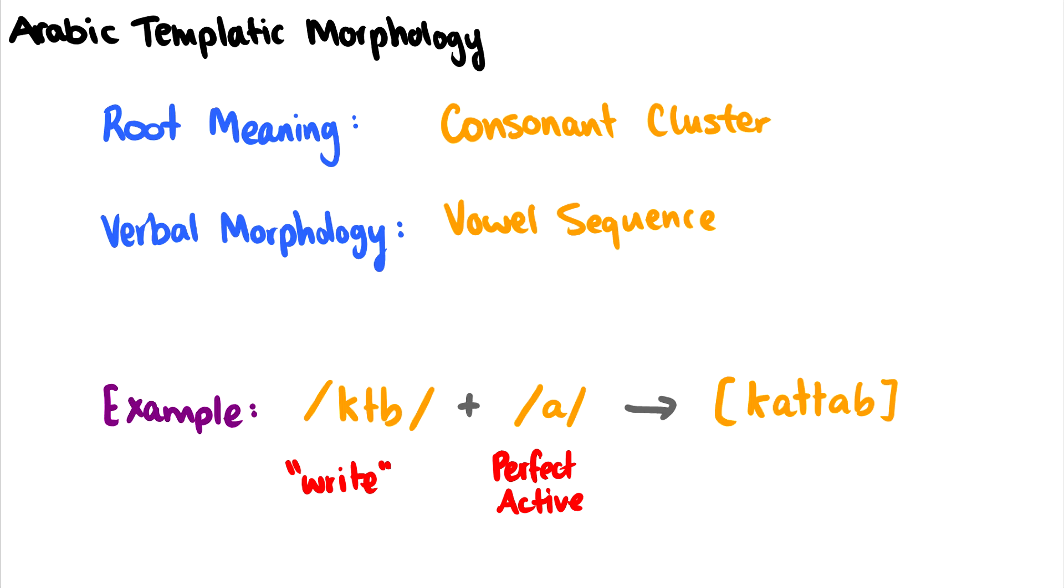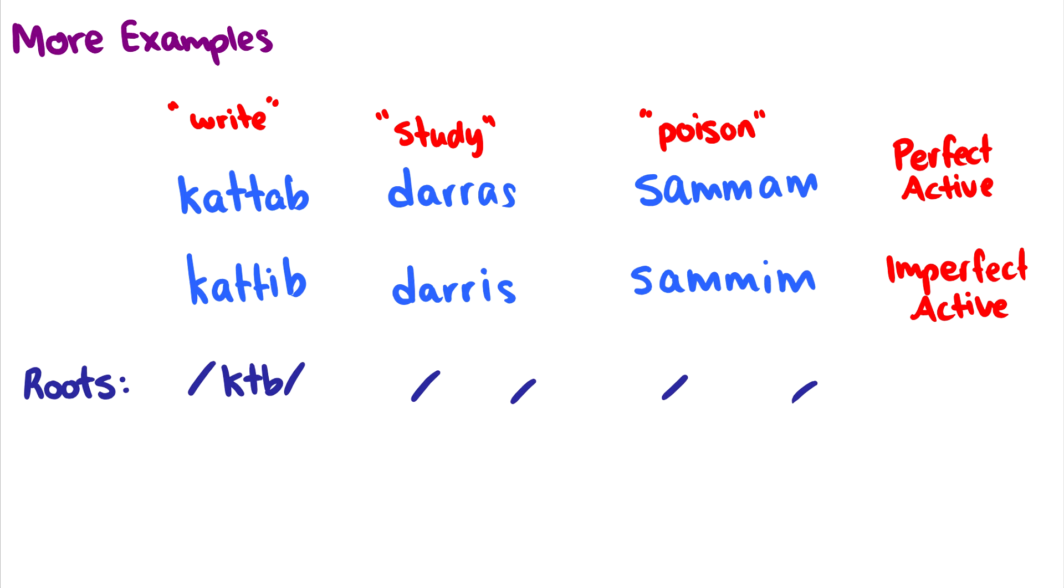So how do we do this with the CV tier? Now this is incredibly amazing. So what I want to do first is I want to take a look at these other examples. So we have katab, which is the perfect active. But with the imperfect active, we see katib. So we see that it's ah and e, not ah and ah. So the underlying form for the imperfect active, what I'm thinking here might be i. But how do we assign this?